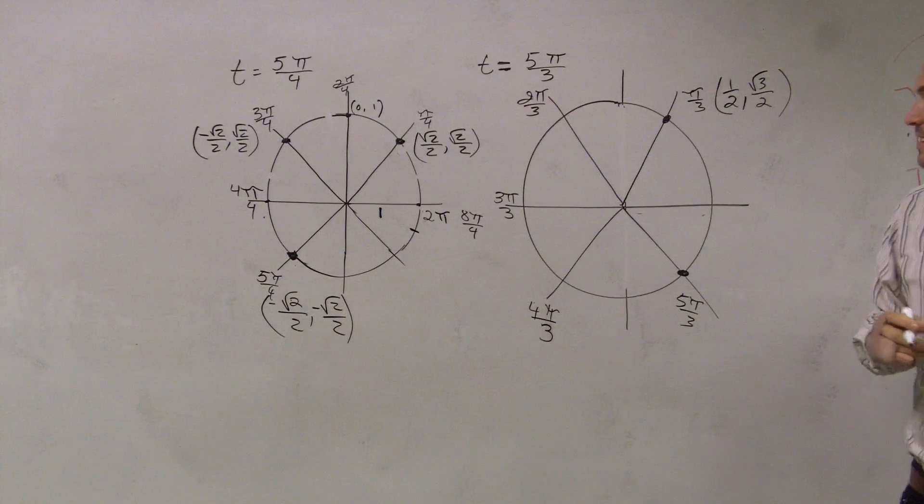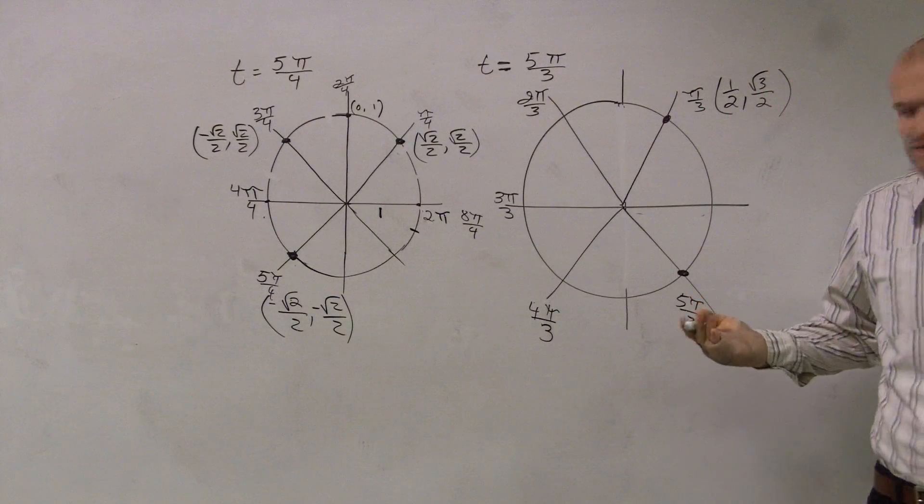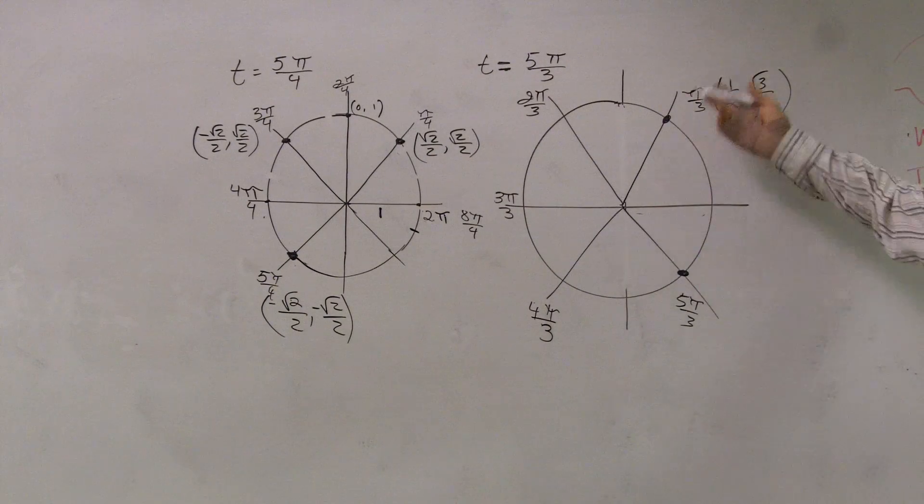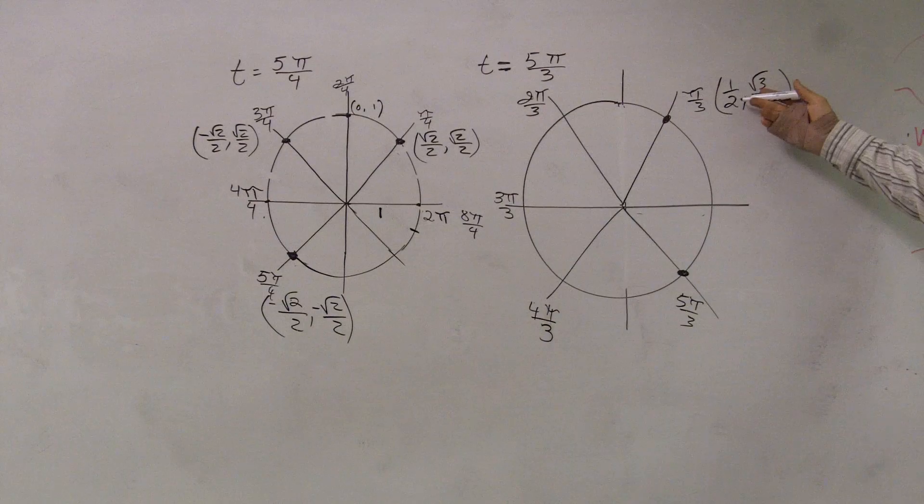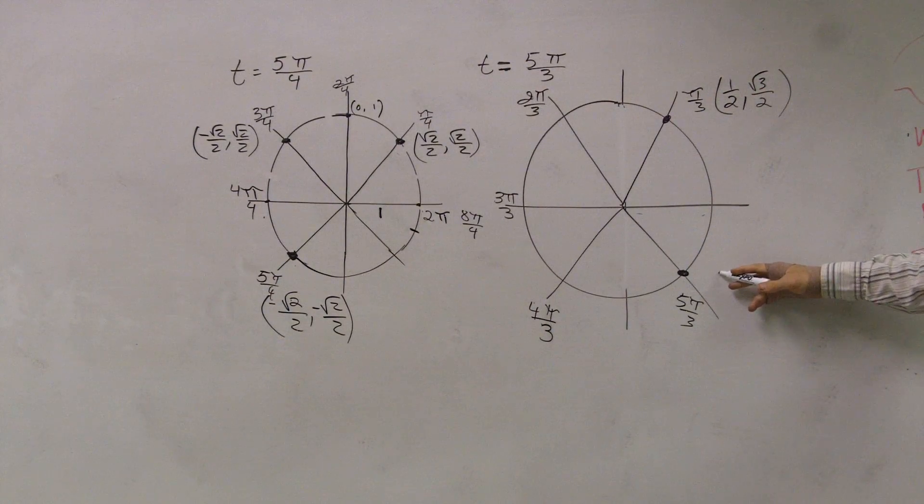And if you can memorize that point, again, what we'll do is look at reflections. These two points are reflections of each other over the x-axis. So therefore, this is a positive x. This one is still going to be a positive x.